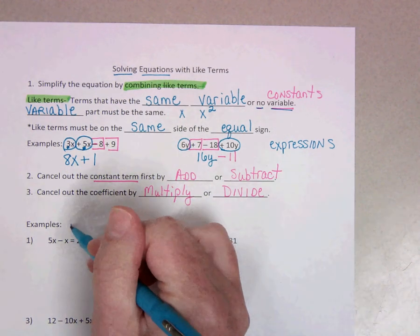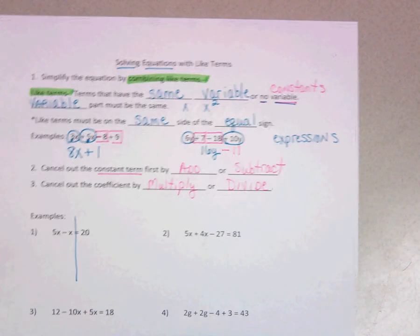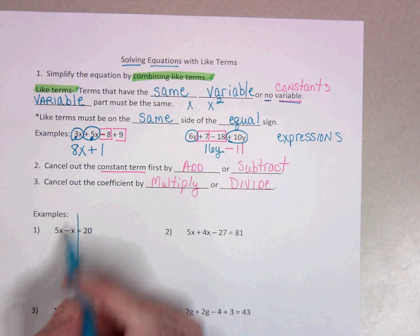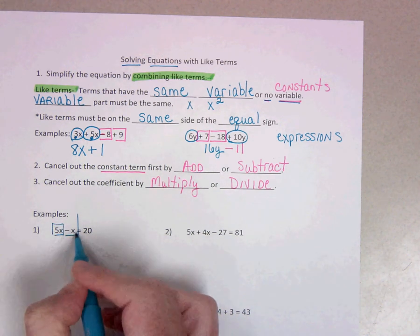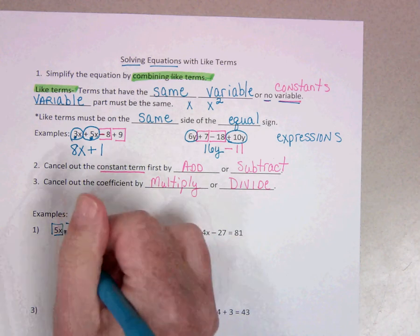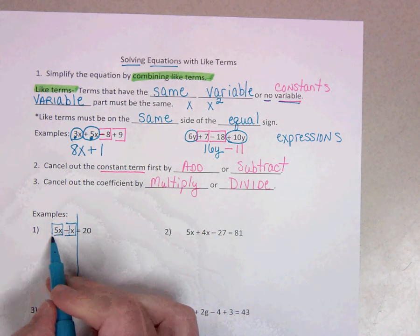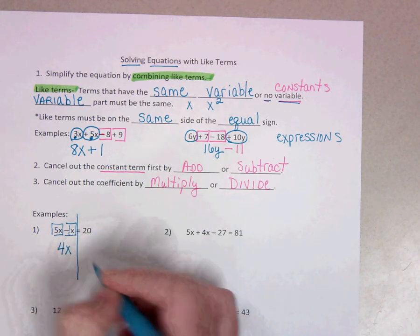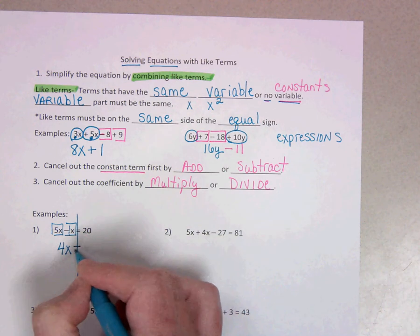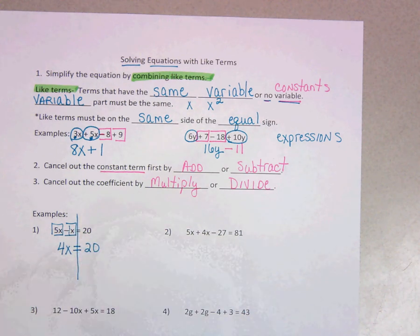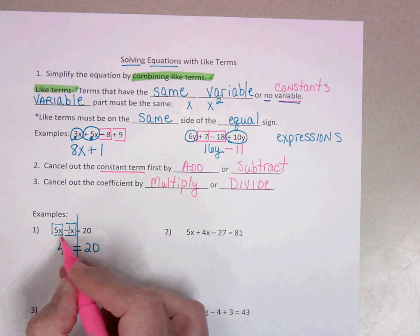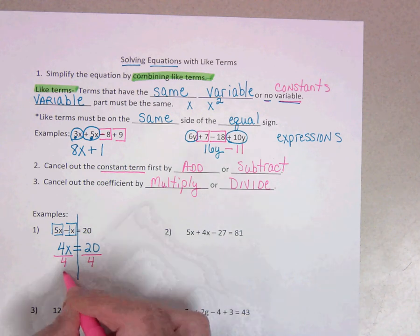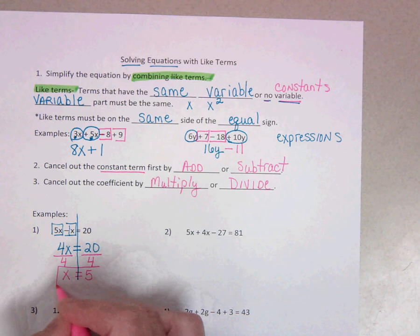First off, it's always a good idea to continue to draw your line down through the equal sign. It helps us identify what our like terms are. Over here on the left, I have some like terms: 5x minus x. Remember, this is an understood one. So 5x minus 1x is 4x. So I've simplified that left side. Equals 20. And now we're just down to a regular equation. To cancel out the 4, or the coefficient, the inverse operation is to divide. So I would get x equals 5.